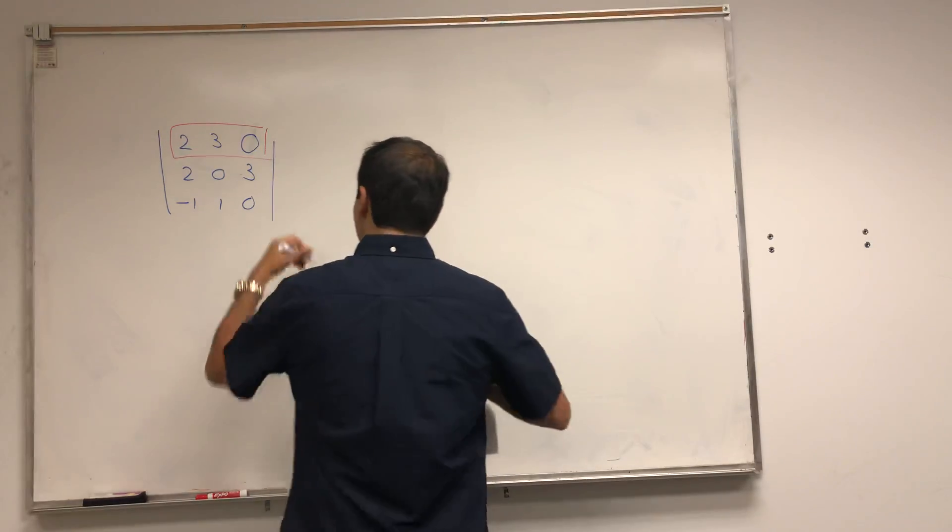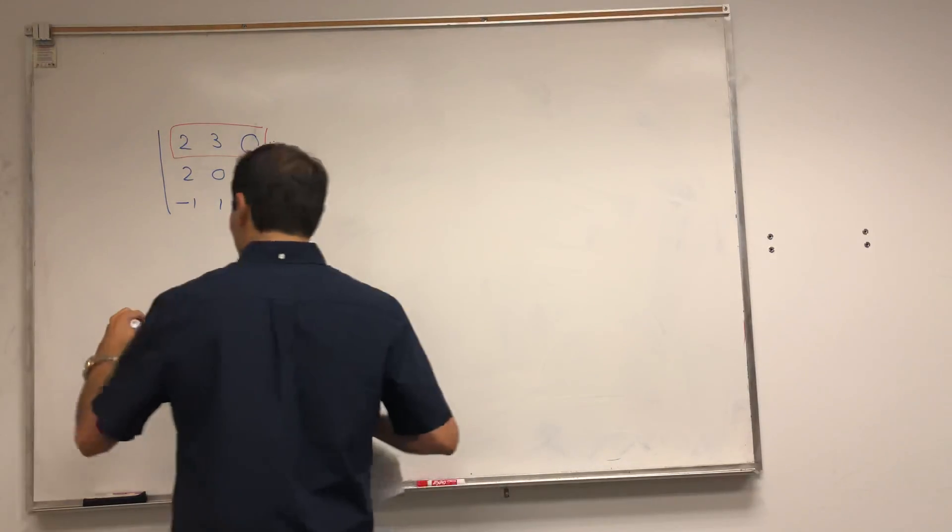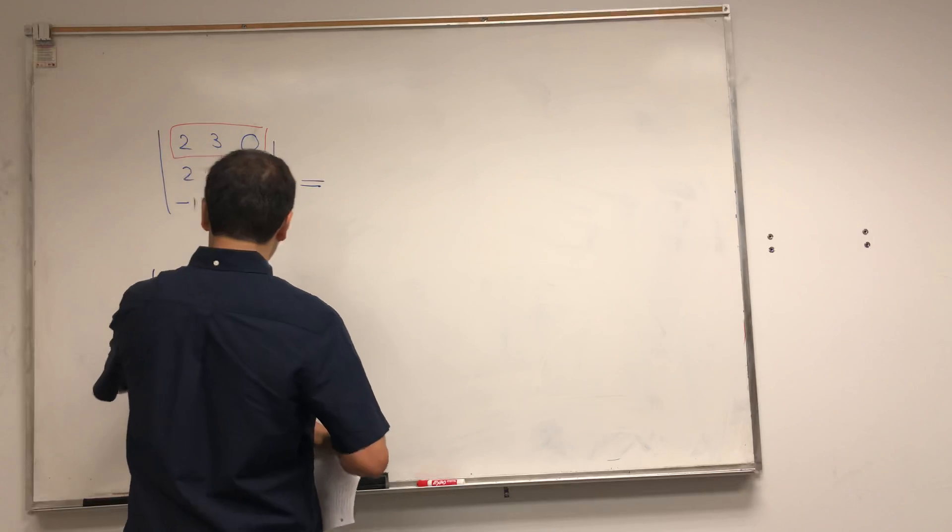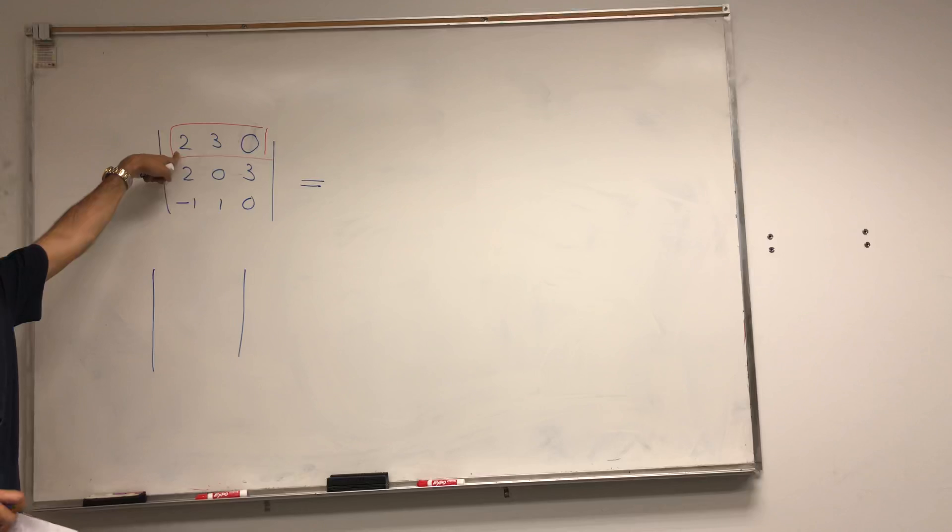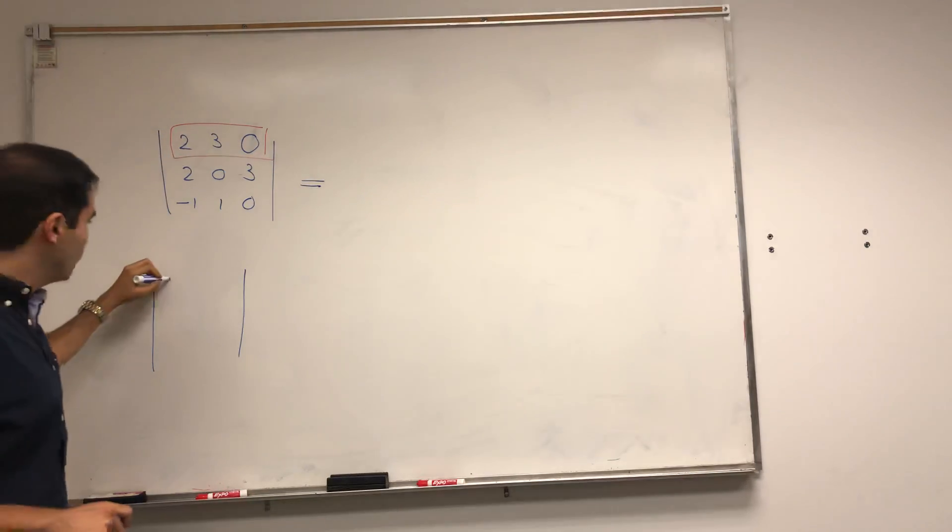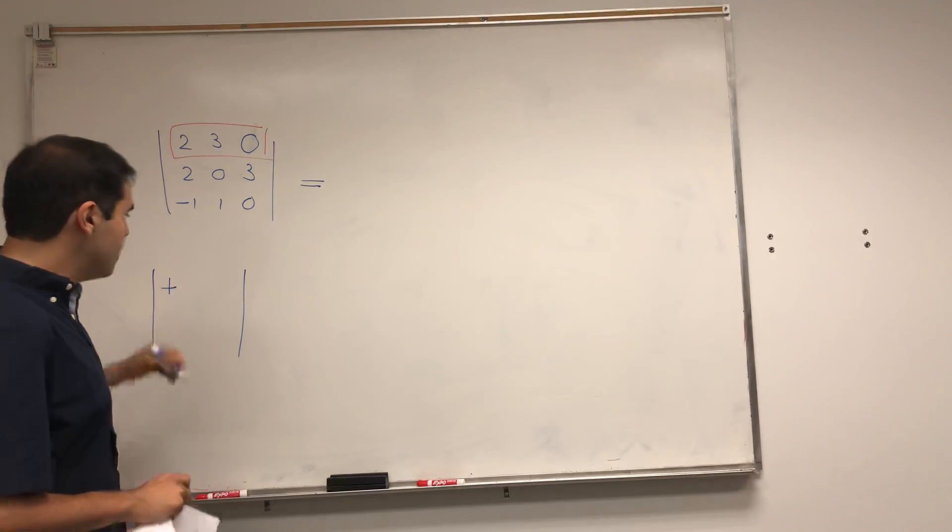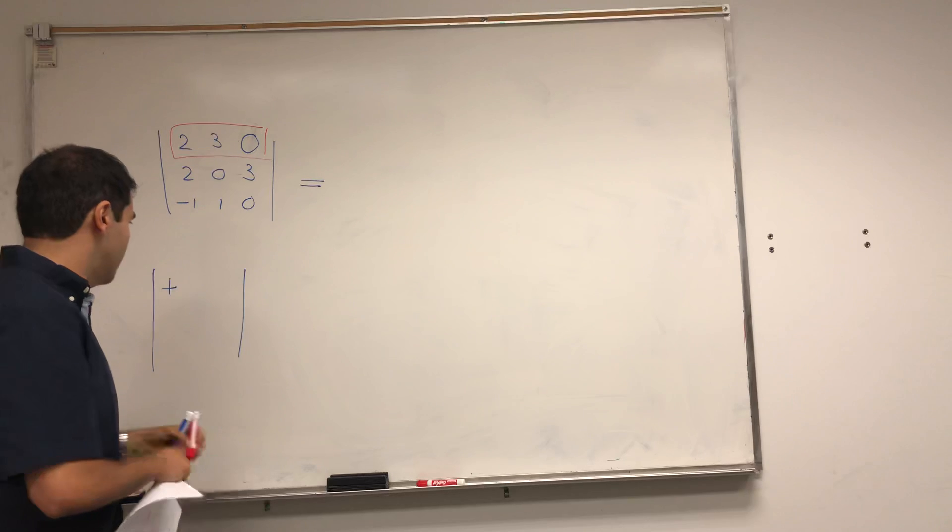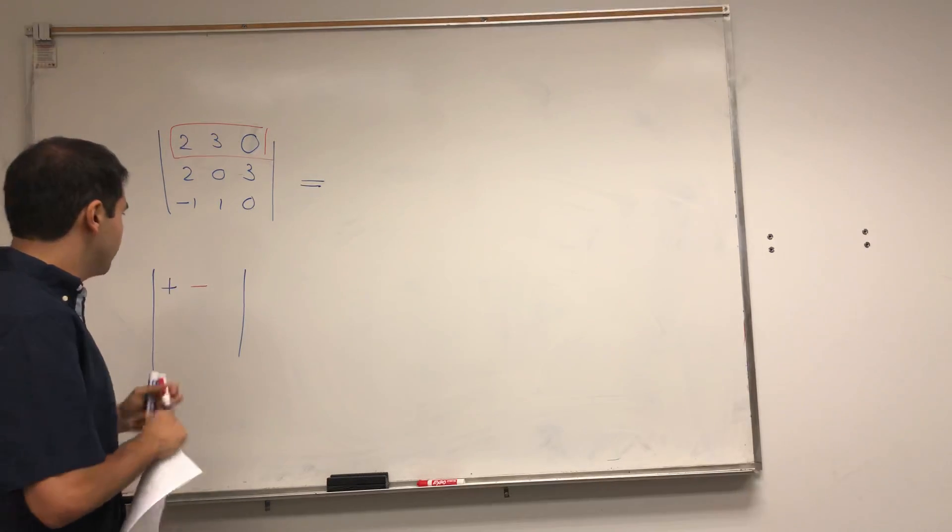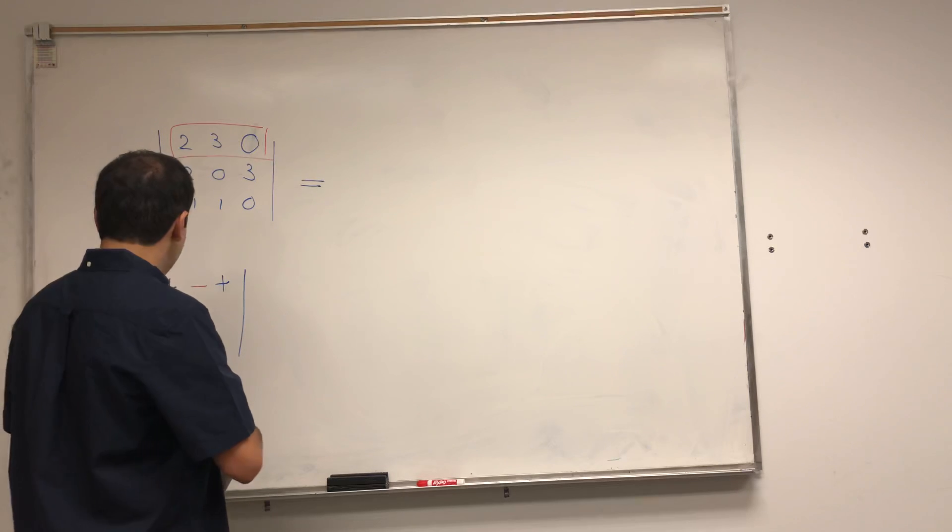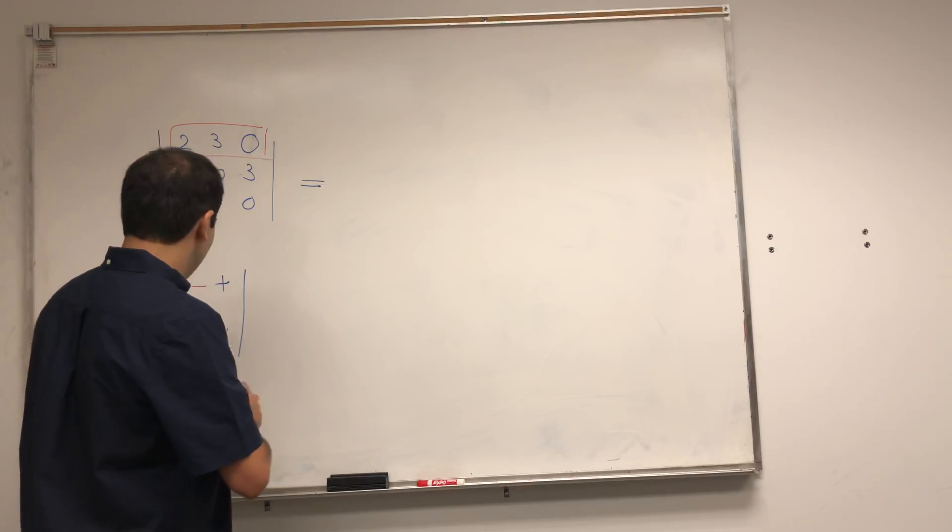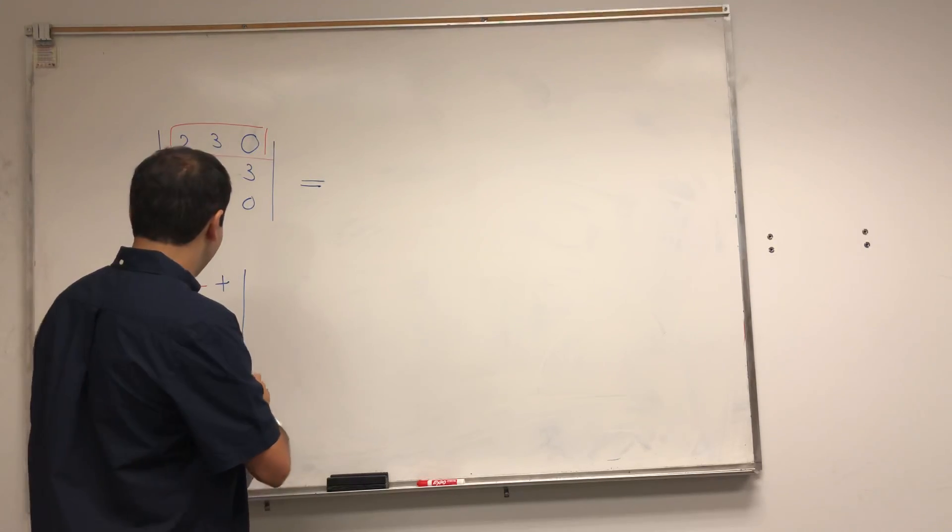And then what you have to do is you have to draw a sign table. What does that mean? It means the thing on the top left corner is a plus, and every time you jump, you change signs. So if you jump here, it's minus. So plus, minus, plus. Minus, plus. So plus, minus, plus. Minus, plus. And then minus, plus, minus.